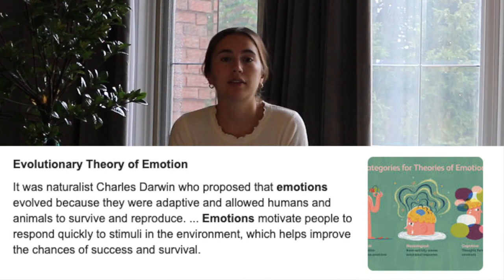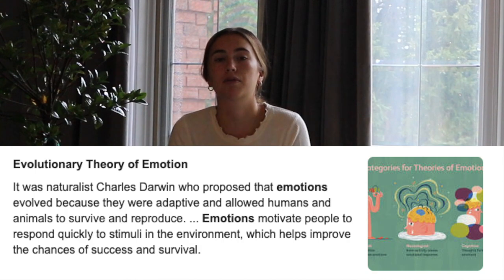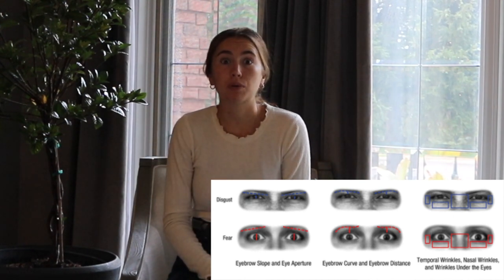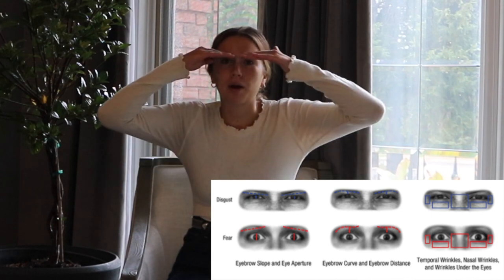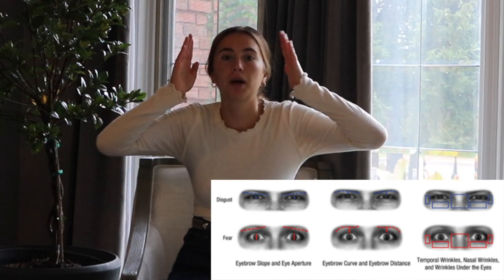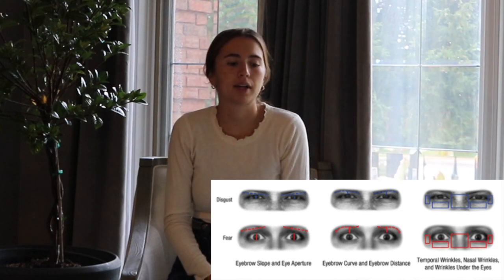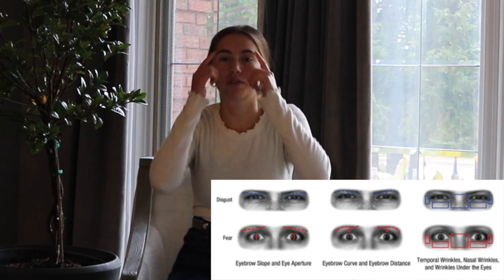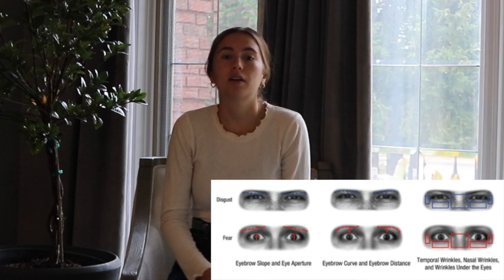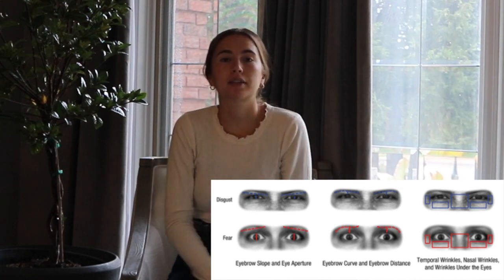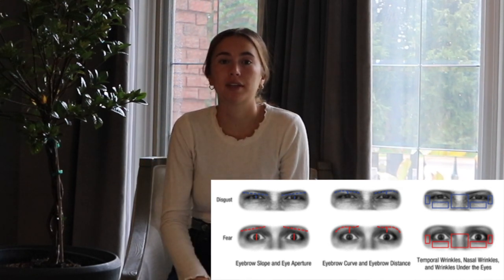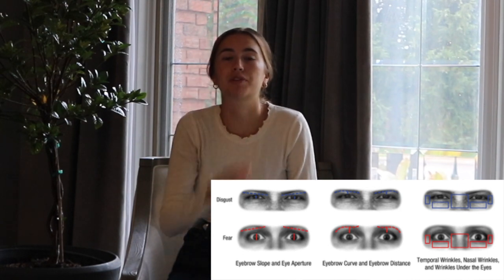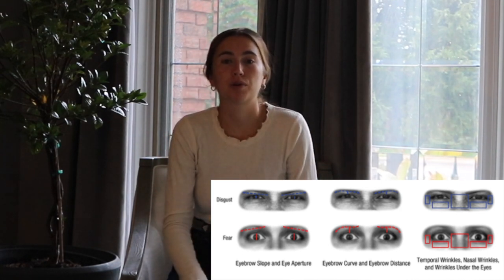They identified six things we can tell from someone's eyes. First, eye aperture — the distance from top to bottom, whether wide or narrow. Second, eyebrow slope — are the eyebrows straight, angled up, or angled down, as with anger or surprise. Third, eyebrow curvature. Fourth, the nasal wrinkle, as with disgust. Fifth and sixth, wrinkles temporally and wrinkles below the eyes. When people smile, their eyes wrinkle and you can tell they're happy even without seeing the rest of the face. This also distinguishes the fake smile, where nothing happens on the upper portion of the face.